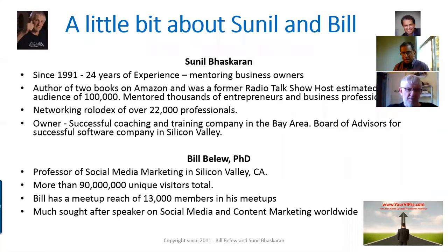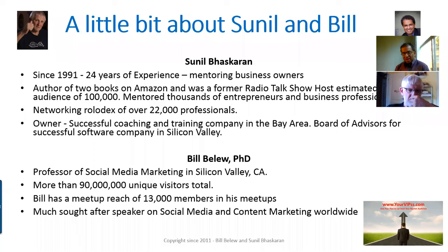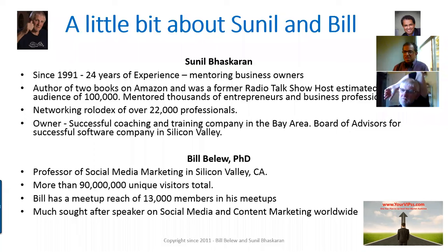My name is Sunil Bhaskaran. I've been coaching and mentoring people for 24 years. I'm an author of two books on Amazon: one is called More Money More Time Less Stress, and the other is an autobiographical book called The Forgiving Universe. I have a networking rolodex of about 22,000 professionals and I own a successful coaching and training company in Silicon Valley. Bill is a professor of social marketing with a PhD, has 90,000 unique visitors on his website, a meetup of 13,000 members, and is a much sought-after speaker.